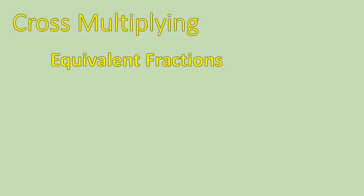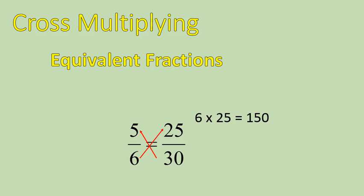First off, cross-multiplying. Cross-multiplying is a way to determine if fractions are equivalent. Here's an example of how cross-multiplying works. You take the numbers that are across from each other, or on diagonals from each other, and multiply them. 6 times 25 is 150, and 30 times 5 is 150. If the numbers across from each other are equal when you multiply them — like 150 and 150 — then these are equivalent fractions. That's one way to tell if fractions are equivalent, using cross-multiplying.